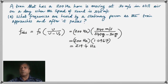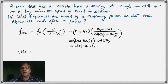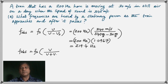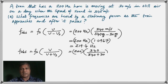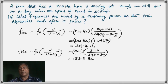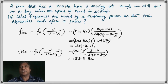When the train leaves the person, the formula changes: in the denominator, the negative becomes a positive. Substituting the numbers, you have 340 plus 30 meters per second in the denominator. It's plus when the source is going away from the listener. Now clearly the frequency appears to have decreased. That's the illustration of the Doppler effect.